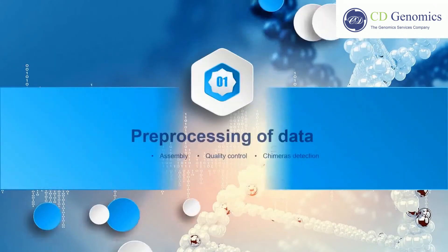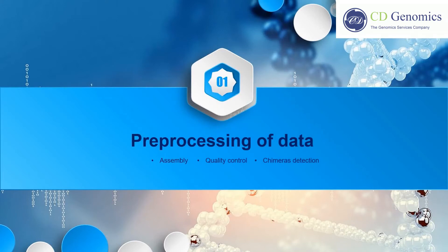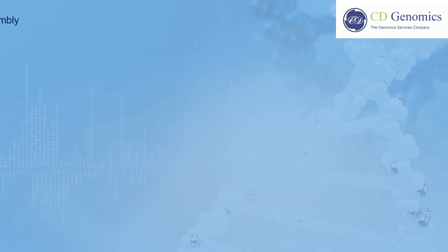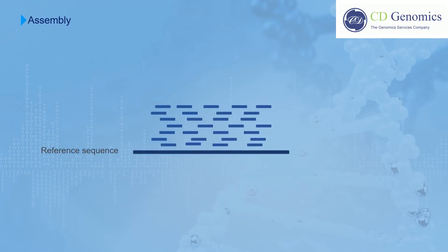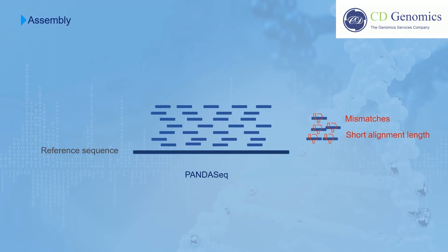To begin with, raw reads need to be pre-processed, which includes three steps: sequence assembly, quality control, and chimera detection. If you need longer 16S ribosomal sequences, the short reads generated by Illumina MiSeq or HiSeq can be assembled by tools such as the PANDAseq algorithm, after barcode demultiplexing. At this step, the overlapping regions are aligned and scored. Alignments with a high proportion of mismatches or short alignment length have low scores and should be discarded.